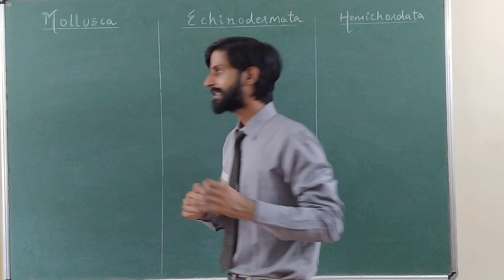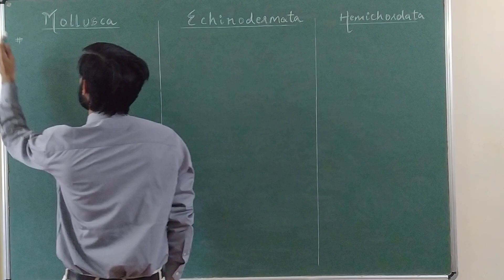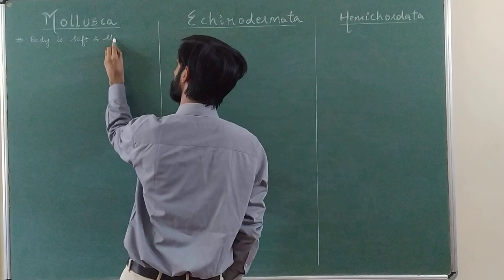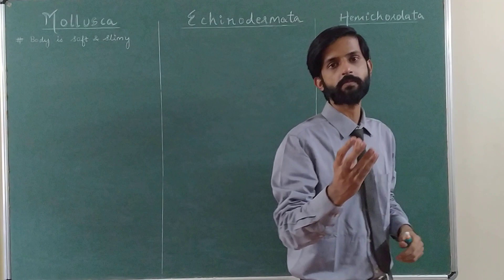Number one: Mollusca. The name Mollusca is given because the body of these animals is extremely soft and slimy. The body is narrow and smooth — it is like a kind of gel. This is why the name Mollusca has been given to them.